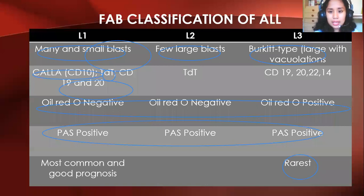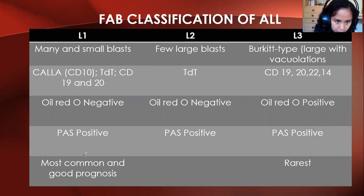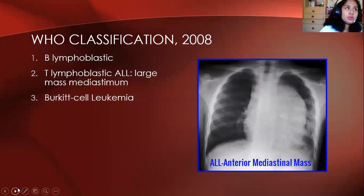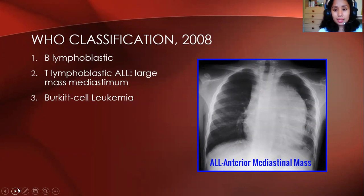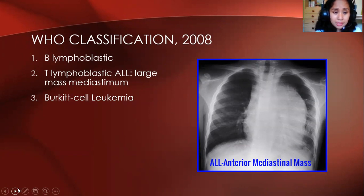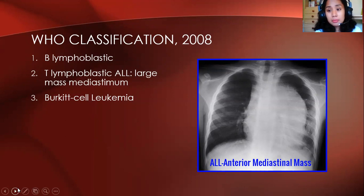M4 is acute myelomonocytic leukemia (Naegeli type) — presence of monocytic cells, positive for non-specific esterases (alpha-naphthyl acetate esterase, alpha-naphthyl butyrate esterase), also positive for MPO and specific esterase. Monocytes tend to infiltrate the gums, so M4 is associated with soft tissue infiltrates and gum swelling. M5 is acute monocytic leukemia (Schilling type) — more than 80% of non-erythroid bone marrow cells belong to the monocytic series, positive for non-specific esterases, negative for MPO and Sudan Black B.